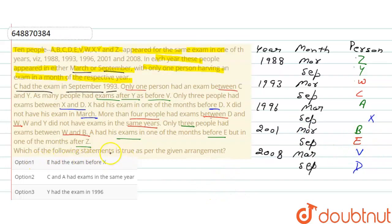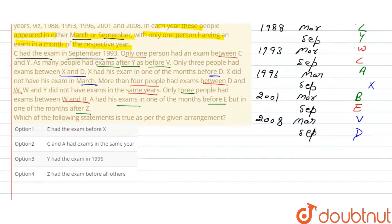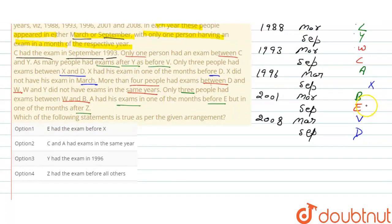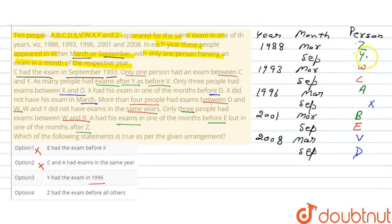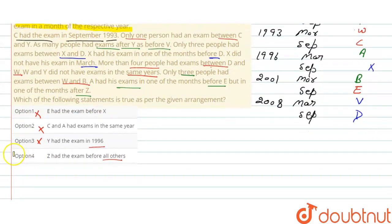Which of the following statement is true as per the given arrangement? We need to find out. First, E had the exam before X. E यहां है, X यहां है, यह गलत है first. Second is C and A had exam in the same year. यहां है A, यहां है C, same year है, different year. Second गलत है. Third is Y had exam in 1996. Y का exam कब हुआ? 1996? यहां देखें it is in 1988. Third भी wrong है. Now fourth is Z had the exam before all other. Z का exam सबसे first है। यहां देखें Z का exam सबसे first है। Z had the exam before all other. Option 4 यहां पे. We had to find out here. Option 4, thank you.